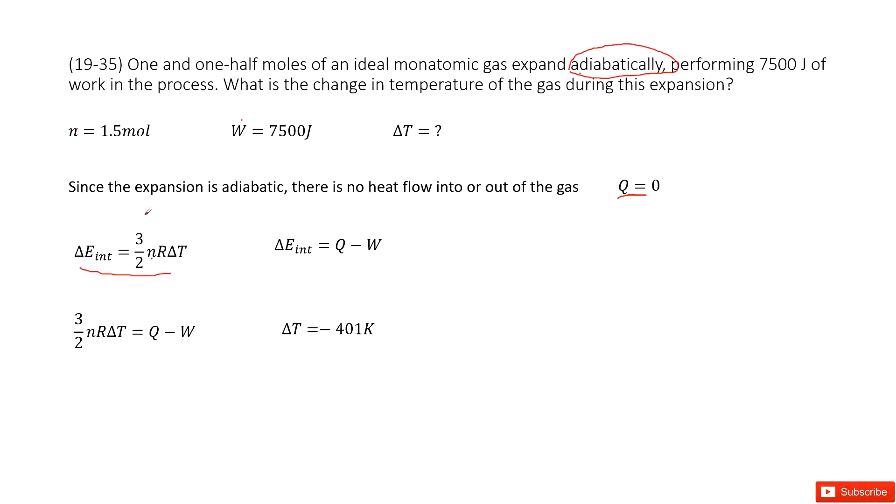We can say n is given, R is a constant. If you need to find delta T, you must need to find the change in internal energy. Can you do that?